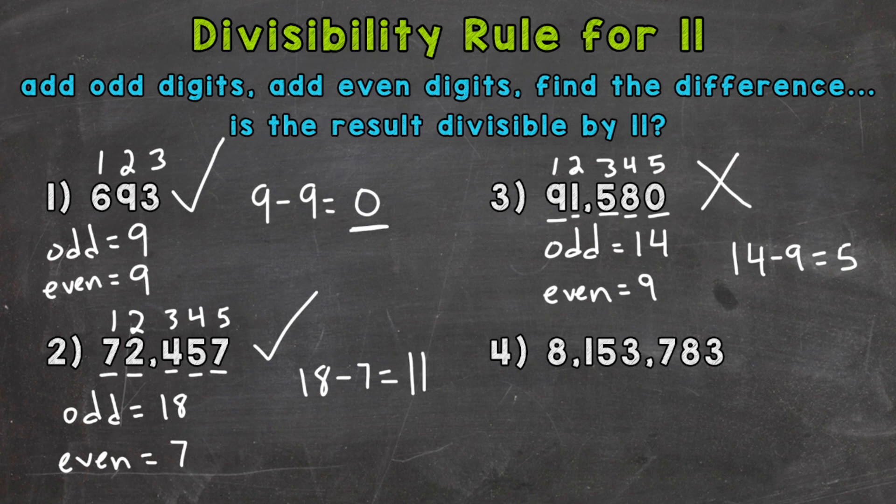And lastly, number 4, we have 8,153,783. So let's count off our digits. Always start from the left. Remember, 1, 2, 3, 4, 5, 6, 7 digits.